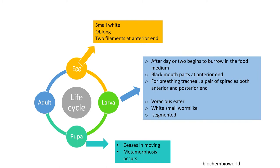During the third instar stage, the larvae feeds until it is ready to pupate, then crawls out of the medium and finds a dry place and ceases to move. The cuticle of the third instar larvae shortens, hardens and darkens to become the pupae. The metamorphosis then usually occurs within the pupae.